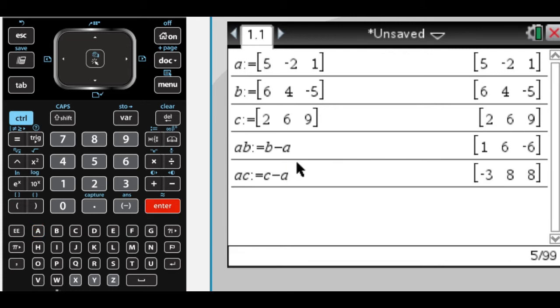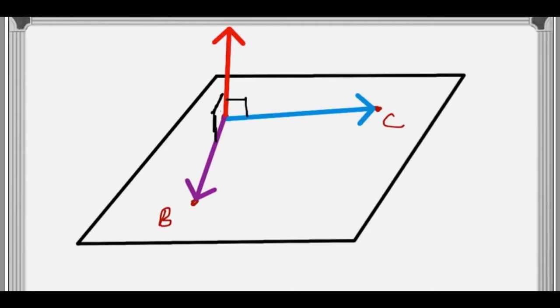So I have those two vectors, and then what I said I wanted to do was find this vector here that's orthogonal to both AC and AB.